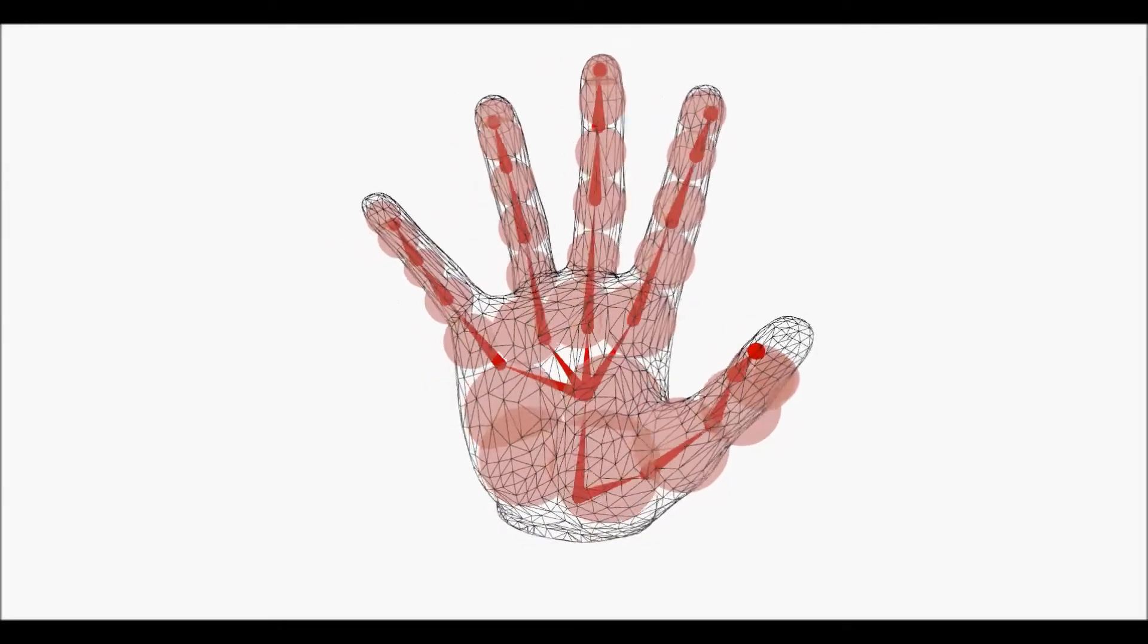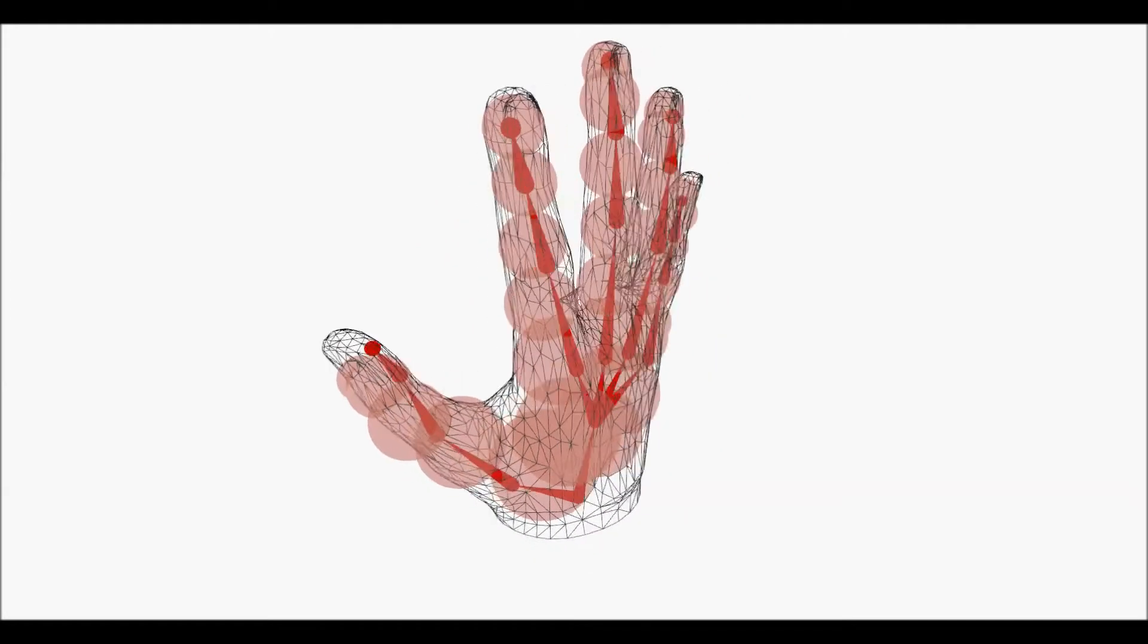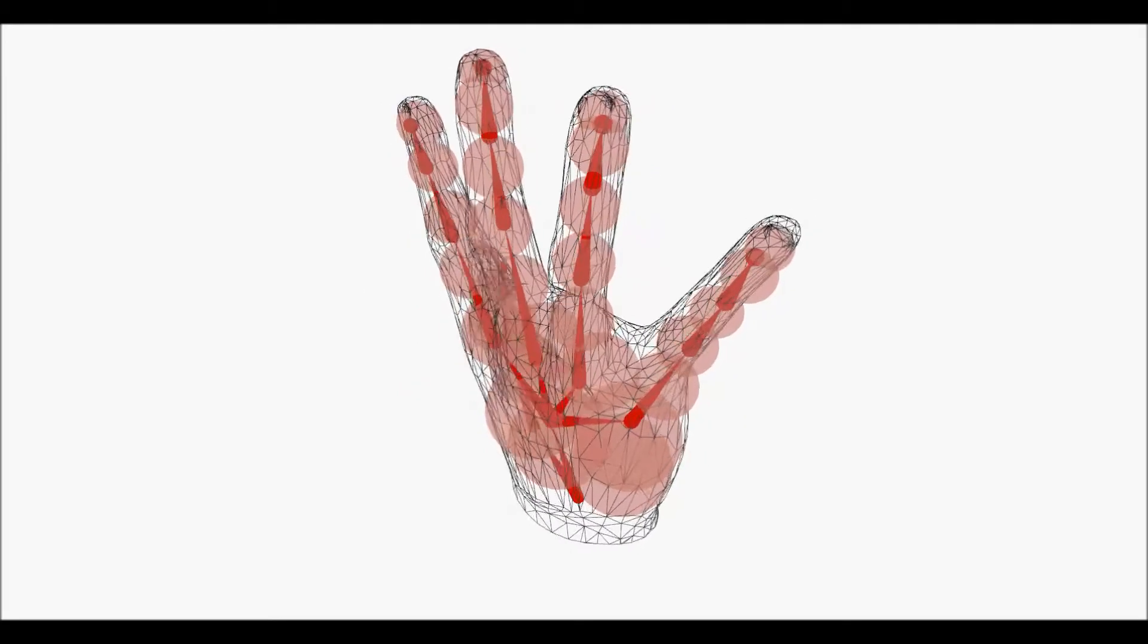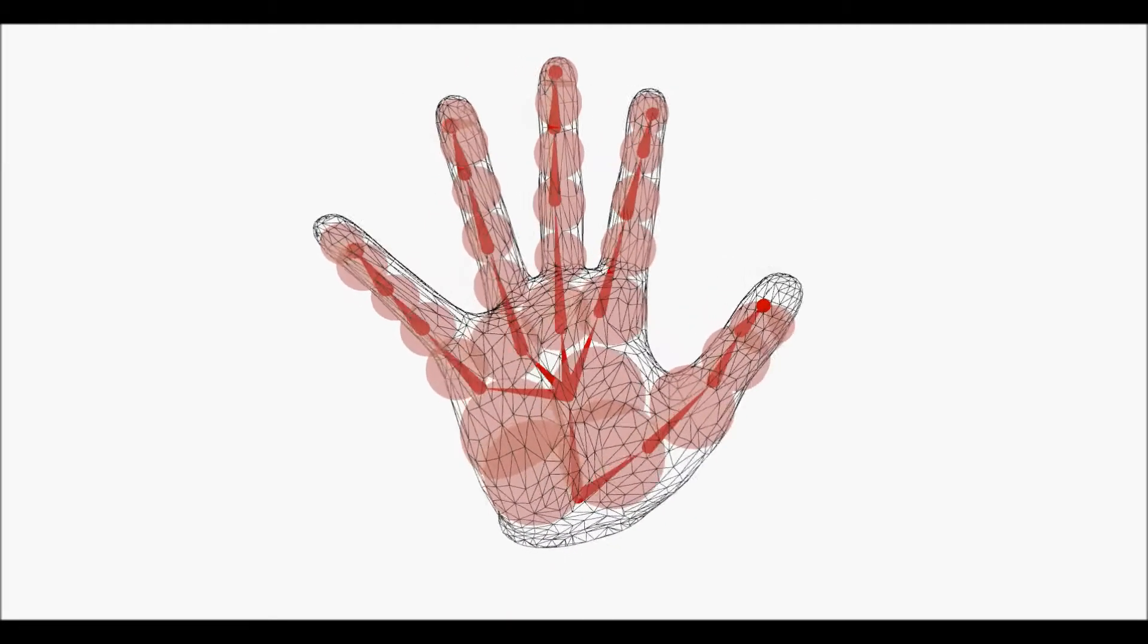We model the hand as a kinematic skeleton consisting of 32 joints and 26 degrees of freedom. This model is also augmented with 30 uniform 3D Gaussians, each with a fixed mean, variance and color.